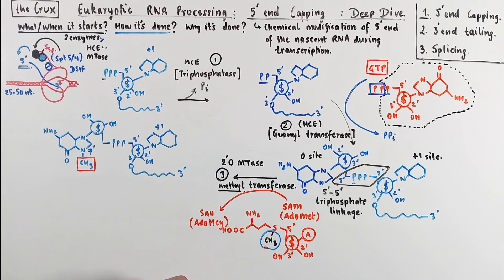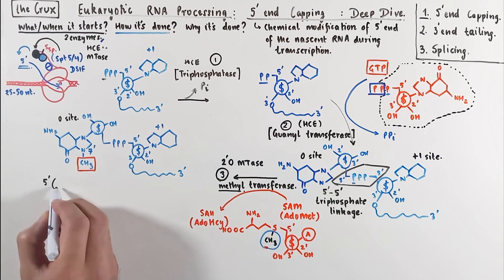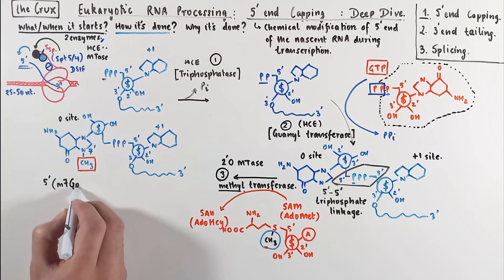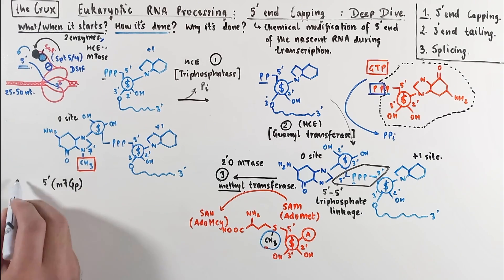And because this transfer of methyl group occurs at the 7th nitrogen, the cap structure can be written in shorthand as 5'm7gp. Now on top of that, because the methyl only exists in this specific cap in site 0, we call this cap a cap 0.